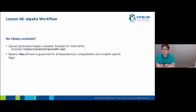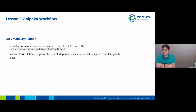If you have absolutely no CMake available and don't want to install CMake, we have special standalone headers available. These are specific to the different accelerators you can use with Alpaca. For example, if you want to use CUDA GPUs, you can just include the standalone header for the CUDA runtime. However, you will have to guarantee all dependencies, compatibilities, and compiler-specific flags associated with this.